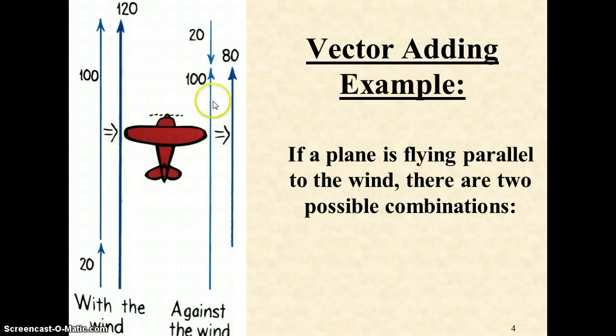If we're against the wind, and I take this 20 and put its tail on the tip of the other, we only get 80. It doesn't matter what the units are here. They could be miles per hour.